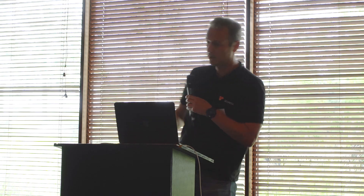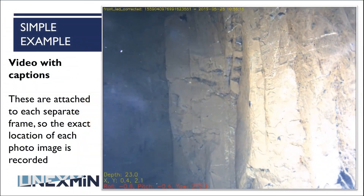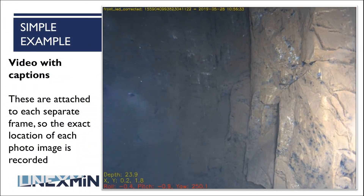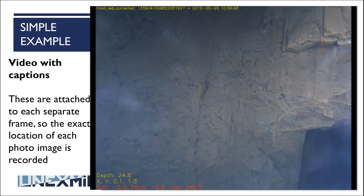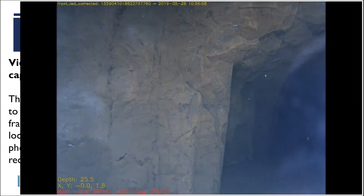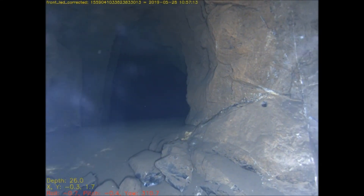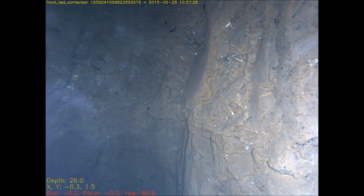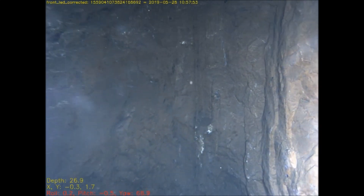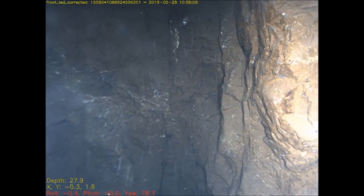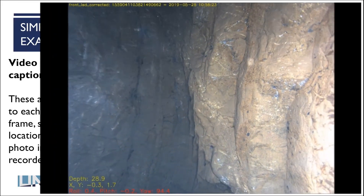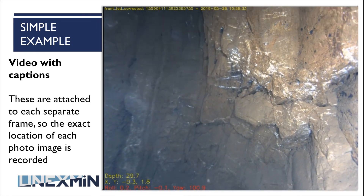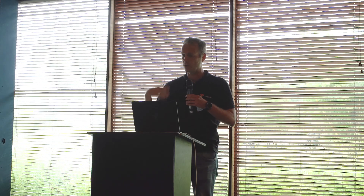You can see an example here. This is one of the videos that we've created — a simple example just to show what it does. You see your depth information and your XY information at the bottom with the robot position, so you actually know which position the robot is at all times while you're viewing the images. At the top you see the timestamps coming in as well, so you know the date when it was taken. And you can also go back to the database and say, this is an interesting image — what is the other data associated with it?